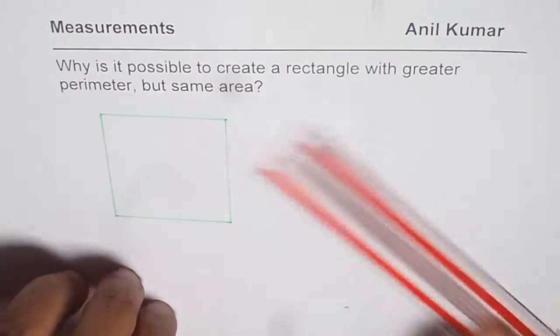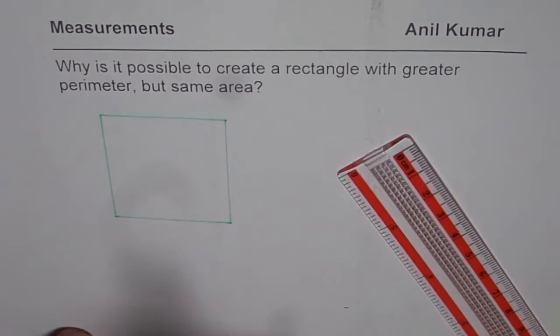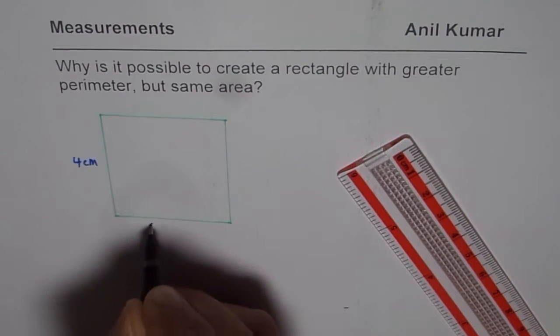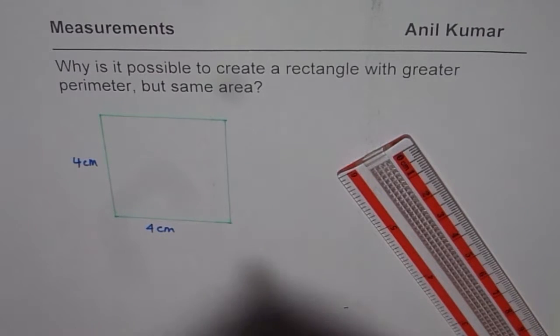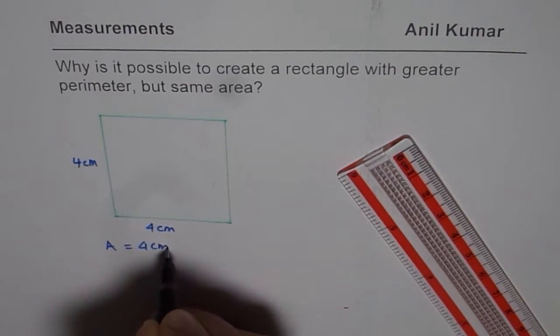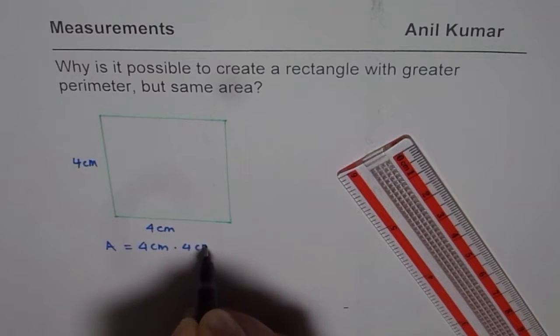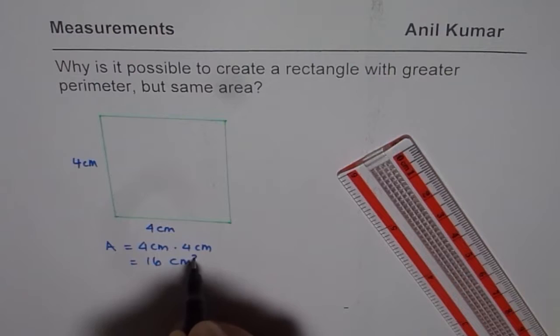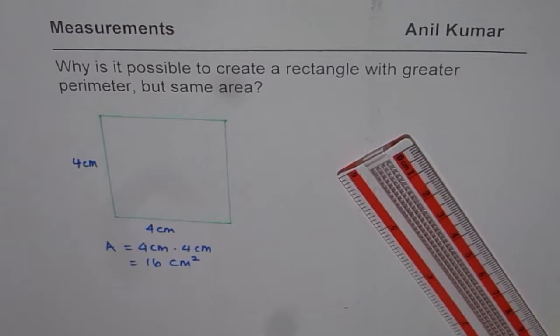Well, area has to be 16. So, we have 4 centimeter by 4 centimeter. So, in this case, area equals 4 centimeter times 4 centimeter, which is 16 centimeter square. So, that is the area.